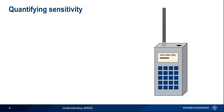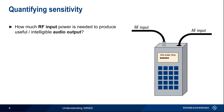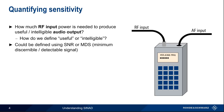We quantify sensitivity by answering the question: how much RF input power is required to produce a useful or intelligible audio output? This of course requires that we define what we mean by useful or intelligible. We could define sensitivity in terms of signal-to-noise ratio, or as the minimum discernible or detectable signal level. The problem with using SNR and MDS to quantify sensitivity is that both of these only consider the effects of noise, not distortion, and distortion does play an important role in the practical sensitivity of a receiver.